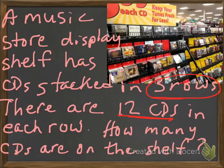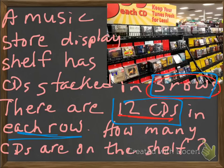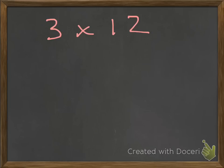So if we take a look at this, we have CDs stacked in 3 rows and there are 12 CDs in each row. How many CDs are on the shelf? Well, we're going to multiply. We're going to do 3 times 12.